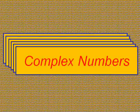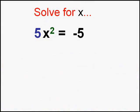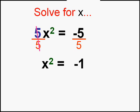I want to prepare you for something crazy that might happen when you're dealing with square roots or any kind of roots. Consider this equation. Let's try and solve it. The first thing we do is divide both sides by 5 to try and isolate that x squared. That's not too bad, and we get x squared equals negative 1.